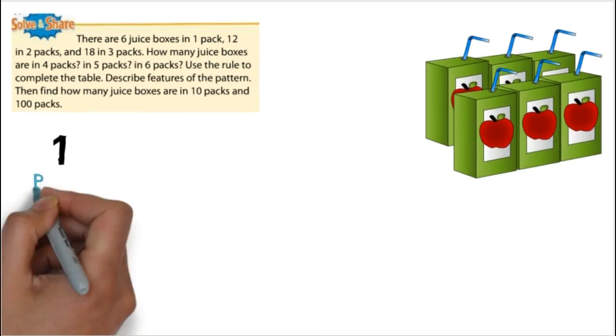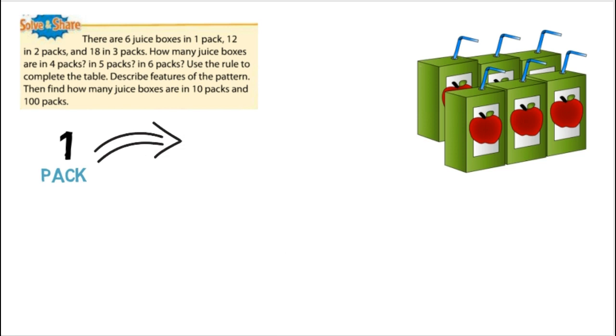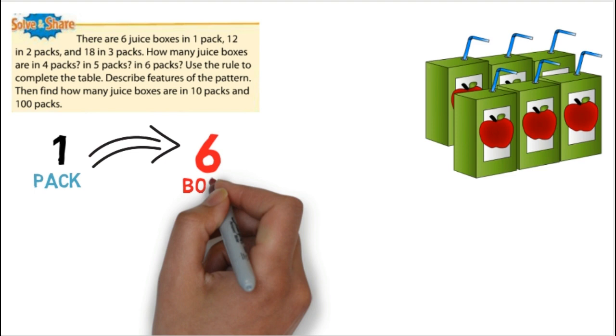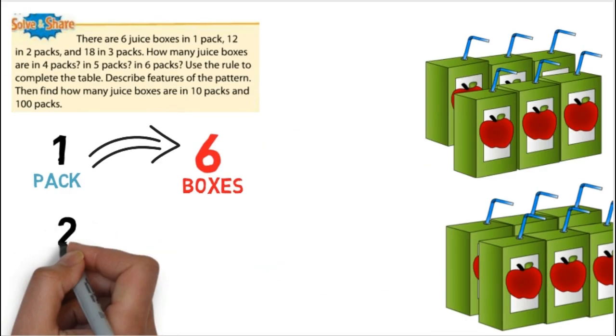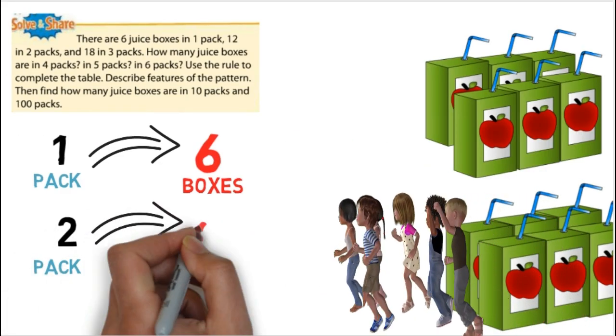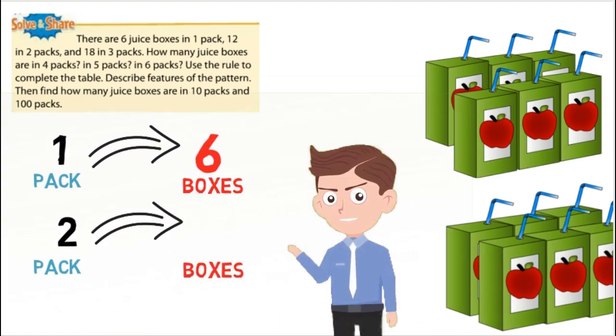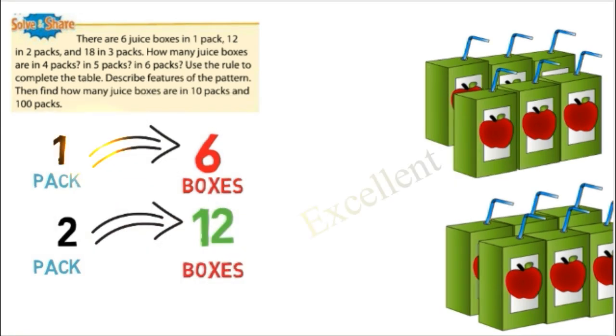As you see guys, in one pack there are six boxes of juice. So in two packs, who can tell me how many boxes of juice we'll have? 12 boxes, excellent. So who can describe the pattern here? What happened to one to be six? What happened to two to be 12?